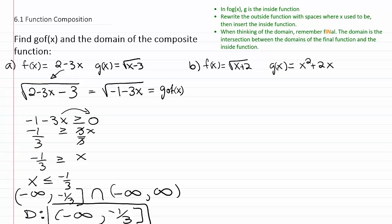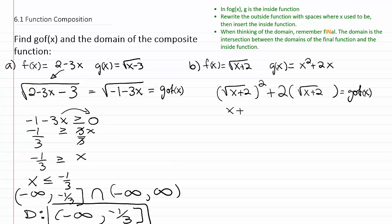Let's take a look at example B. You're doing the same thing — g of f of x. Write down g and leave a space where the x's are located in the function, so it'll be: space squared plus two times space. In the space, you're going to plug in the f function since f is the inside function here. The f function is the square root of x plus two. Squaring the square root just gives you what's underneath it, so it'll be x plus two, then plus two times the square root of x plus two. That is your g of f of x function.